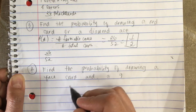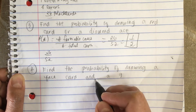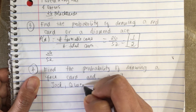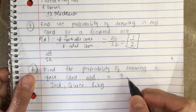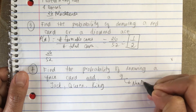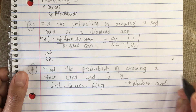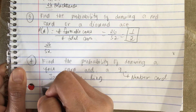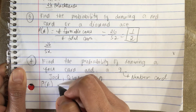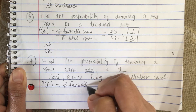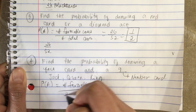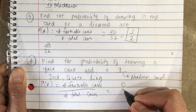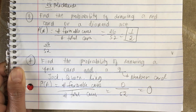Find the probability of drawing a face card and a nine. Face cards are jack, queen, and king — a nine is a number card. A face card and a nine cannot be the same card, so this is not a possibility. The probability of A equals the number of favorable cases over the total cases, and since there are no favorable cases, this is 0 over 52, which equals zero.